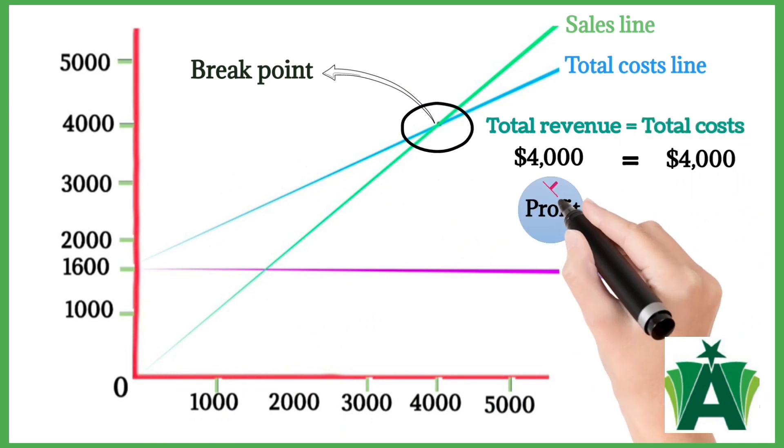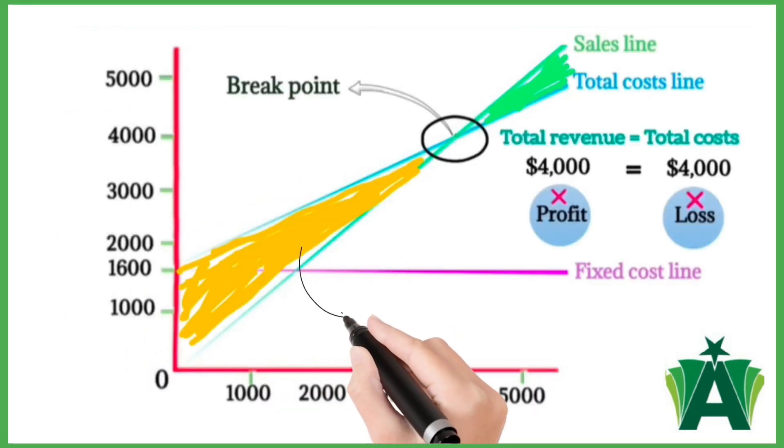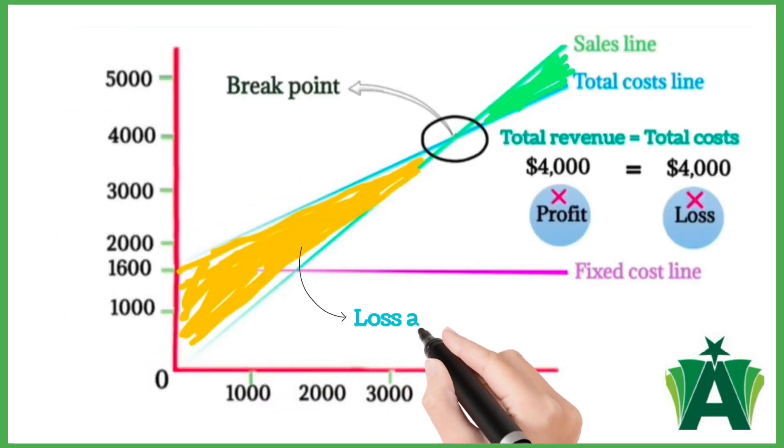That means a company neither earns a profit nor incurs a loss. The shaded area to the left of the break-even point is the loss area, while the shaded area to the right is the profit area.